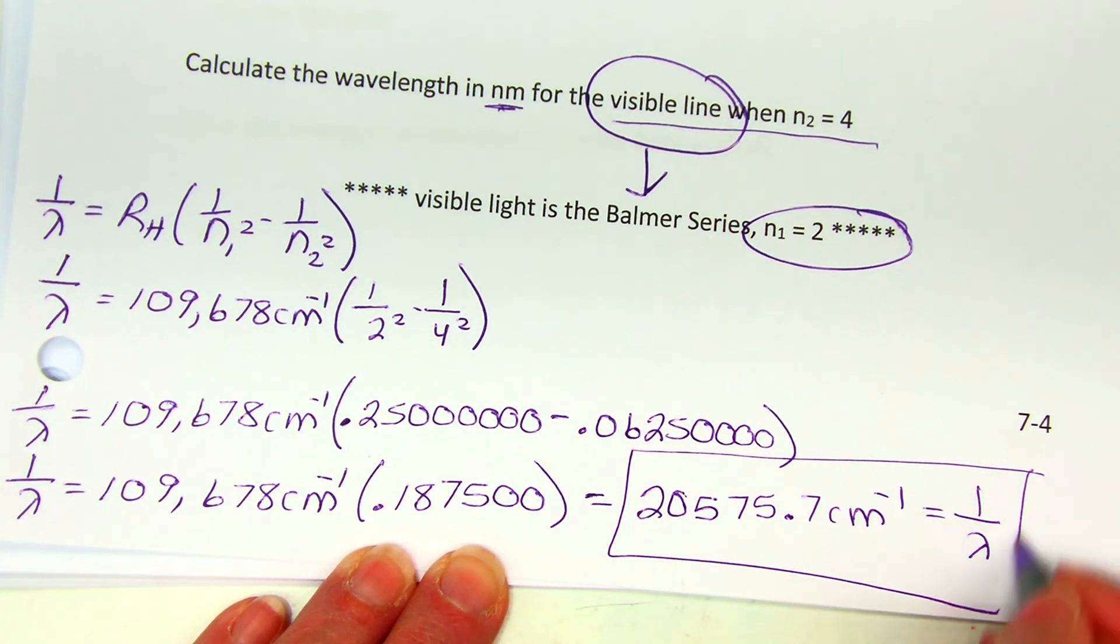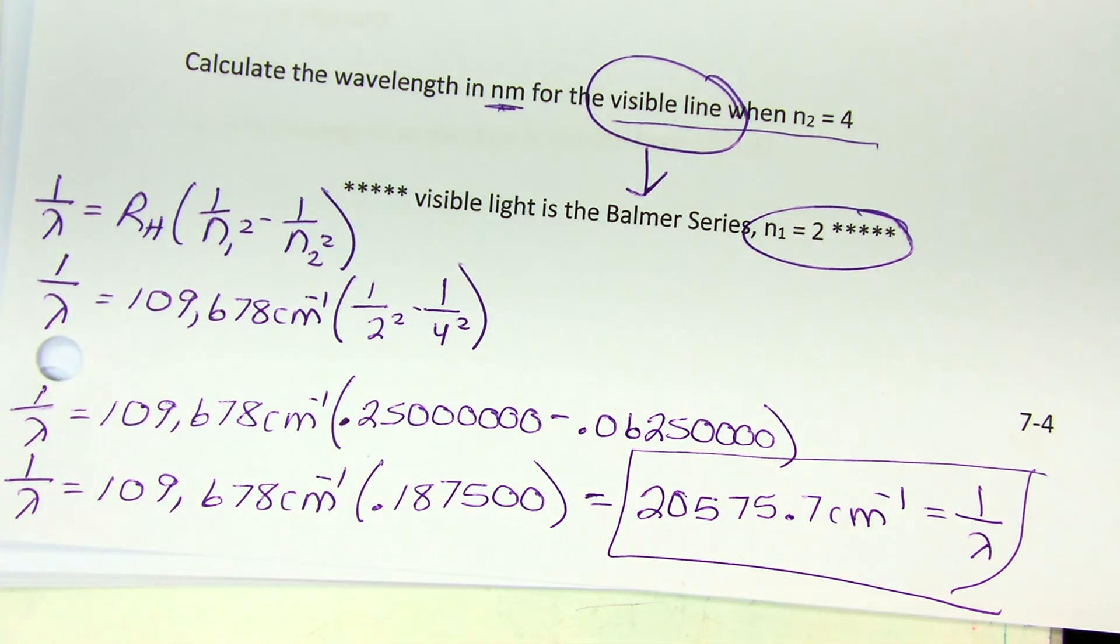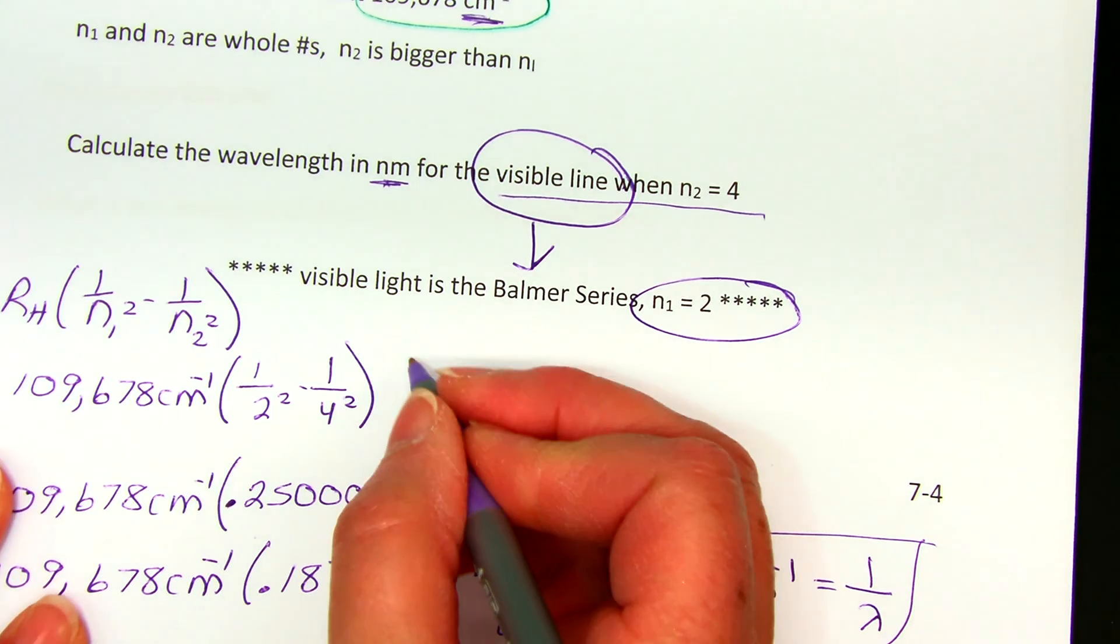Now the biggest problem I see on the quiz and test is my students stop here. We're not done. The question said what is the wavelength. It didn't say what is the reciprocal of the wavelength. Because this is 1 over lambda, we call that the wave number. So I need to take the reciprocal, because right now I have units of reciprocal centimeters.